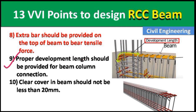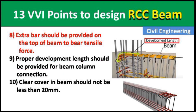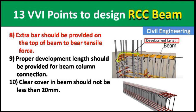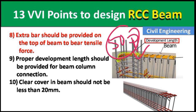Point 9: Proper development length should be provided for the beam-column connection. When connecting the beam to the column, extra steel must extend into the column to create bonding between them — this is known as the development length. It should be more than 50d, where d is the diameter of the steel rod used in the beam.